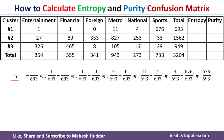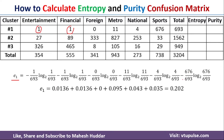The entropy of the first cluster, E1, is calculated as: minus (1/693) log base 2 (1/693) — for Entertainment — minus (1/693) log base 2 (1/693) — for Financial. The third class contributes 0, the fourth (Metro) contributes 11/693, the fifth contributes 4/693, and the sixth contributes 676/693. Once you solve this equation, you get 0.202 as the entropy for Cluster 1.